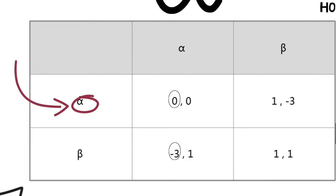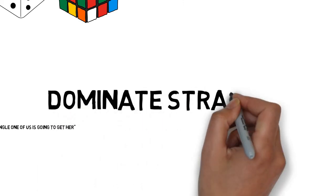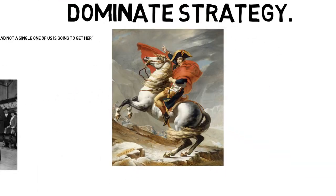Zero is more than minus three. If B chooses beta, A gets one. So if you choose alpha, you have a dominant strategy. Of course you can get a better result.